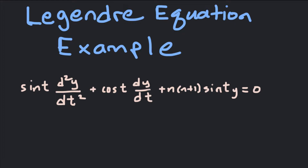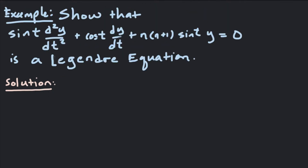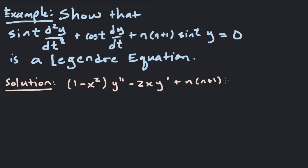First of all, we're going to look at a substitution that we can make to hopefully simplify this equation into a Legendre equation. Let's recall what a Legendre equation is. A Legendre equation is any differential equation of the form 1 minus x squared y double prime minus 2xy prime plus n times n plus 1 y equals 0. That's our Legendre differential equation, and we want to turn our equation up here into this form. This is our endgame — our goal is to reach this equation.